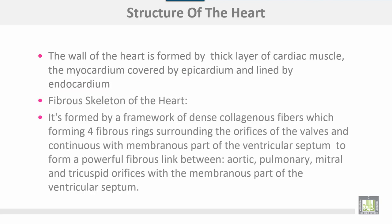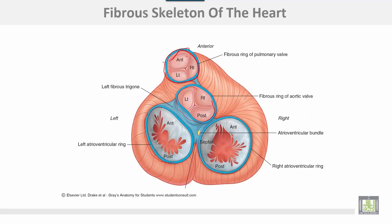The fibrous skeleton of the heart is formed by a framework of dense collagenous fibers which form four fibrous rings surrounding the orifices of the valves, and continuous with the membranous part of the ventricular septum to form a powerful fibrous link between the aortic, pulmonary, mitral, and tricuspid orifices with the membranous part of the ventricular septum.